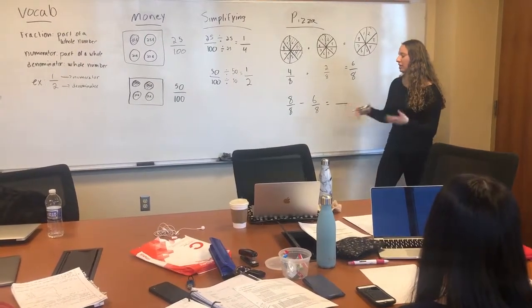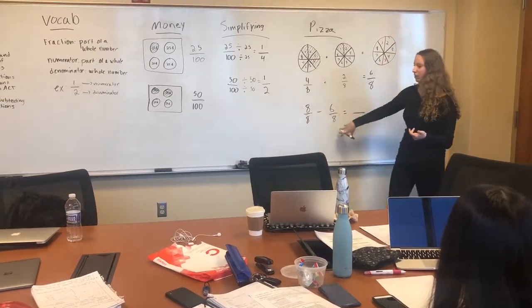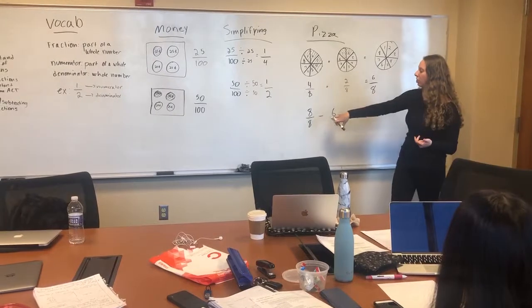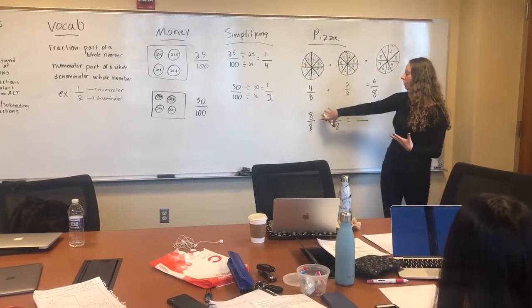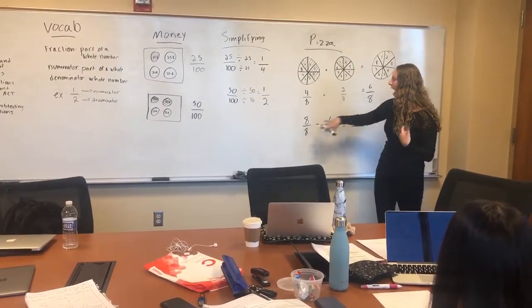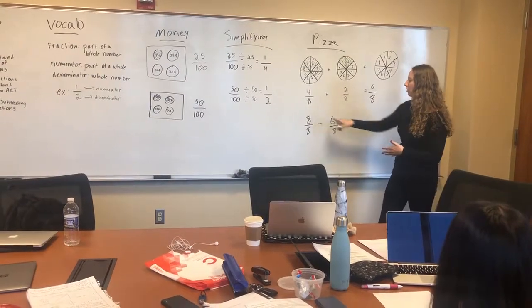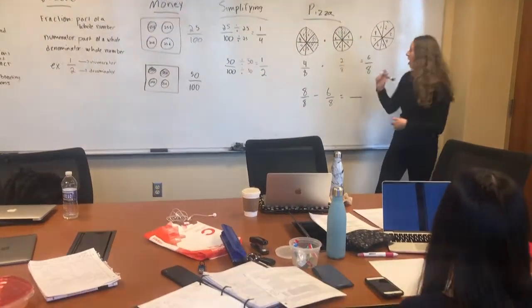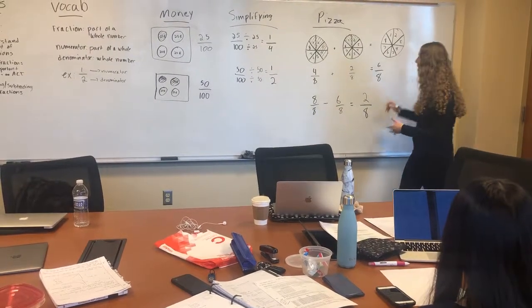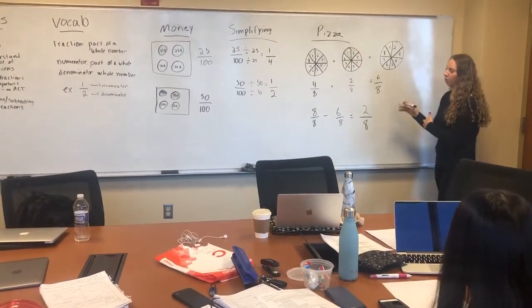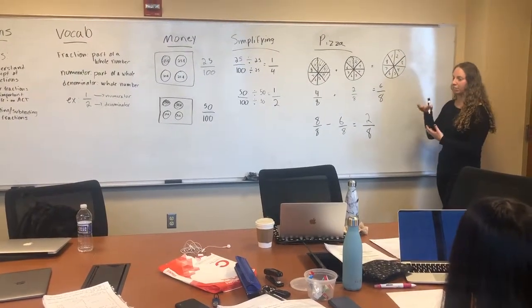Now let's practice subtraction — it's pretty much the same thing. All we have to do is subtract the numerators and leave the denominators alone. This shows us how to figure out how much of the pizza is left. If we started with eight pieces out of eight pieces and we ate six out of eight pieces, how much do we have left? We do eight minus six, which gives us two, and we leave the denominator as eight.